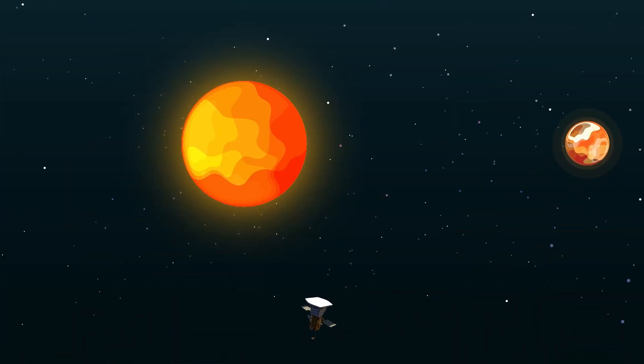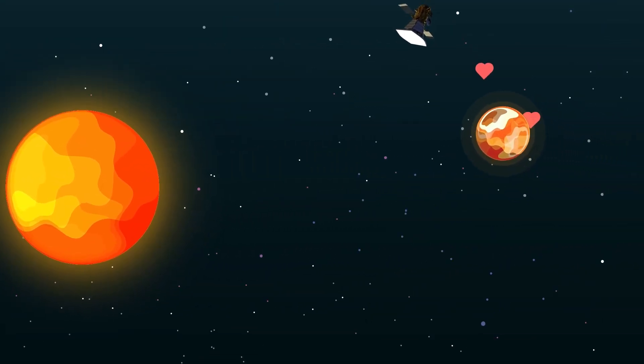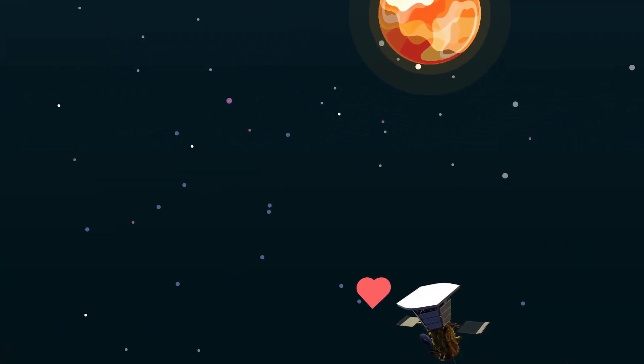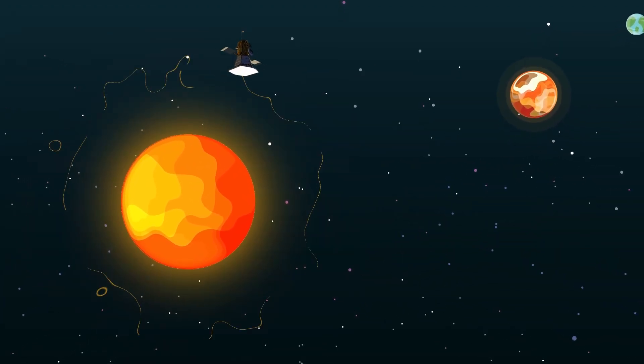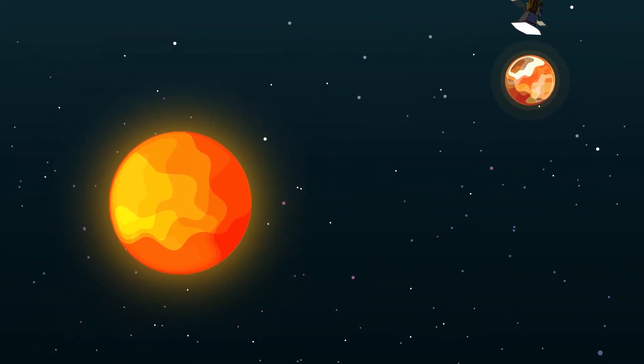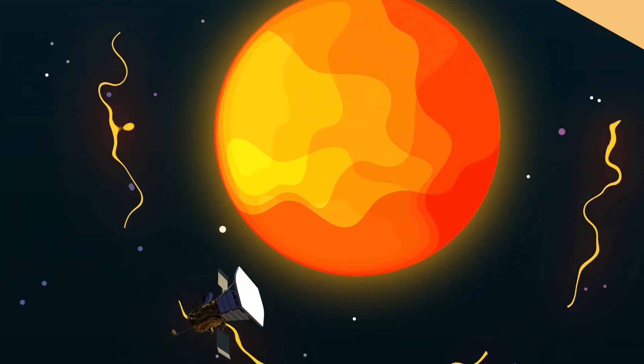In the case of the Parker Solar Probe, it will use Venus for several gravity assists in order to continue to slow down its sideways velocity and make a closer approach toward the sun during each orbit. Meanwhile, the sun's gravity will exert an increasingly stronger pull on the Parker Solar Probe each time, drawing it closer and closer to its surface with each new orbit.